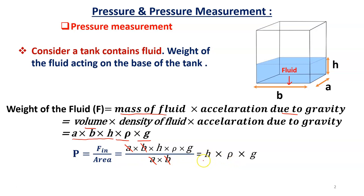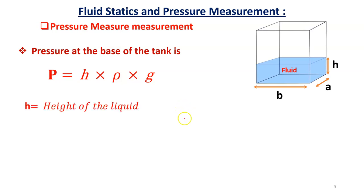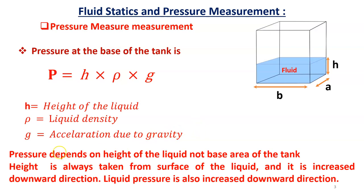The A terms cancel and the B terms cancel, leaving pressure at the base of the tank as P = h × rho × g. Here h is the height of the fluid, rho is the liquid density, and g is acceleration due to gravity. Importantly, pressure depends only on the height of the liquid, not on the base area of the tank.